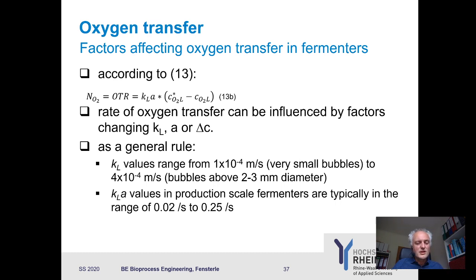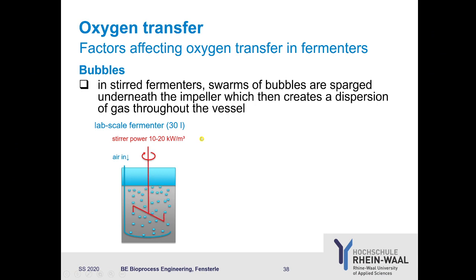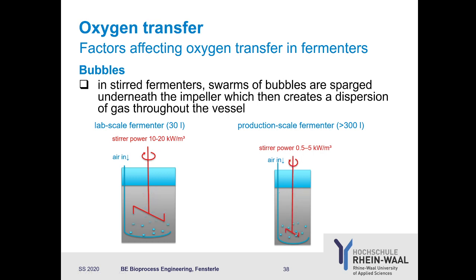In a stirred fermenter, you sparge bubbles into the bioreactor from the bottom underneath the impeller, which creates a dispersion of gas throughout the vessel. In a lab scale fermenter, the stir power is between 10 to 20 kW/m³, giving an even dispersion of bubbles throughout the vessel. This is different from a production scale fermenter, where it is more difficult for the stirrer to affect the complete area.